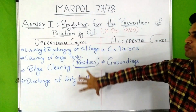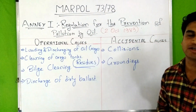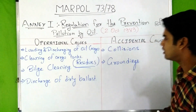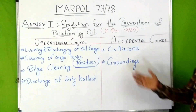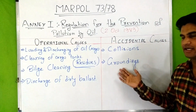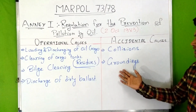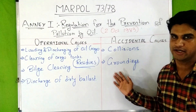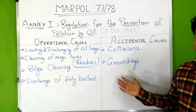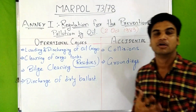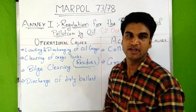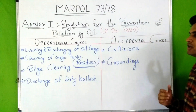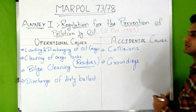Accidental causes include collisions and groundings. The Torrey Canyon is an example of grounding, as is Exxon Valdez. We will see what steps have been taken to prevent oil pollution from both operational and accidental causes.